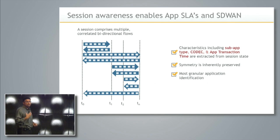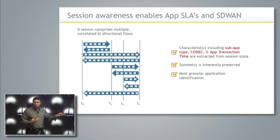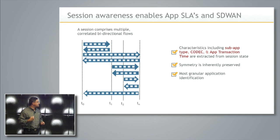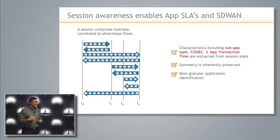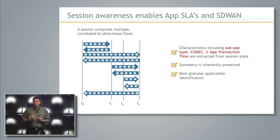What we've done with our architecture is we've really moved to the session level. We actually correlate multiple bi-directional flows on a per-application basis. When we do that, symmetry is now inherent to the application — we don't have to worry about different ways of hashing. We also get very granular application identification and we're able to do fingerprinting at the session level, identifying sub-app type, codec, as well as application transaction time.